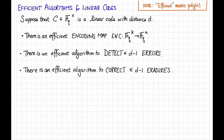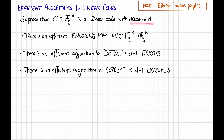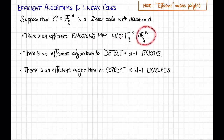Suppose that C, a subset of Fq to the n, is a linear code of distance d. Then the following three things are true. First, there is an efficient encoding map, enc, which maps a message from Fq to the k to a codeword in Fq to the n, in C.